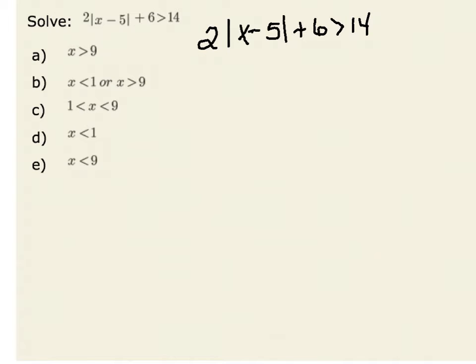In order to solve this inequality, one thing we could do is isolate that absolute value. Therefore, I'm going to subtract 6 from both sides of the inequality. This gives me 2 times the absolute value of x minus 5 is greater than 14 minus 6, or 8.